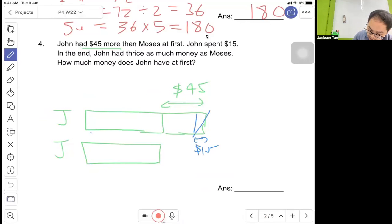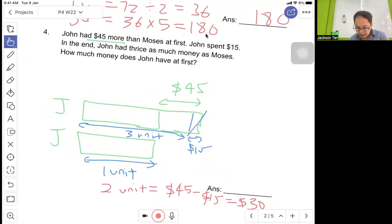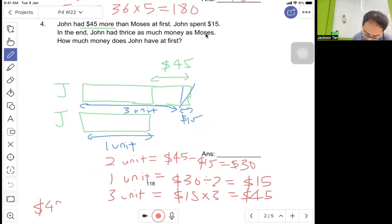After spending $15, John has three times as much as Moses. This is three units, this is one unit. Comparing, two units equal $45 minus $15 equals $30. One unit equals $30 divided by 2 equals $15. How much money does John have at first? Three units, so three units will be $15 times 3 equals $45, plus $45 plus $15 equals $60. Answer is $60.